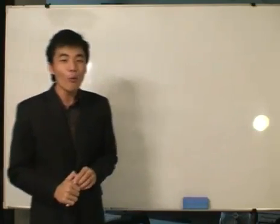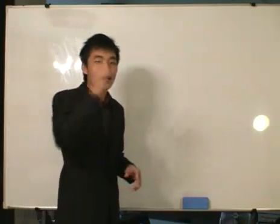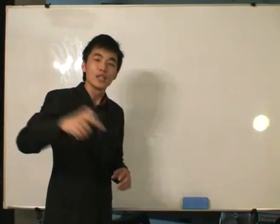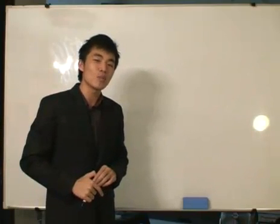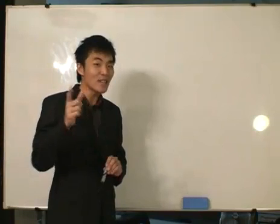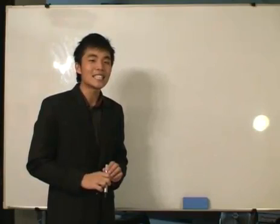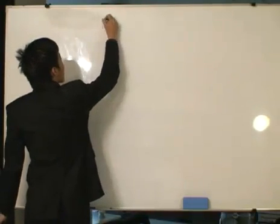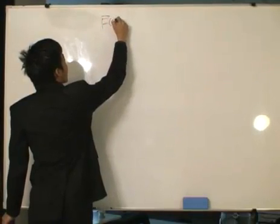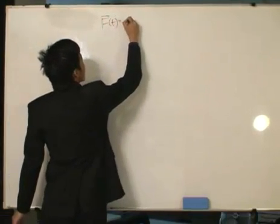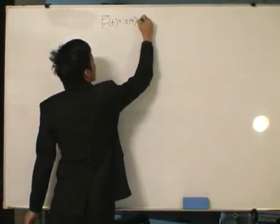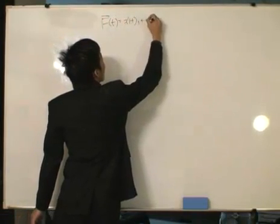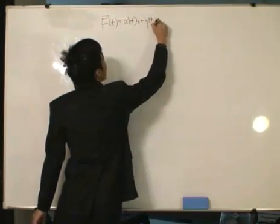But before we go into that, we still need to recap and define another term to really show the curvature of the curve. We'll see why later, and that is, again, using the arc length, but this term that we're going to define is called the unit tangent vector. Because if you really know that the tangent vector is equal to this, differentiating each of the components like that.